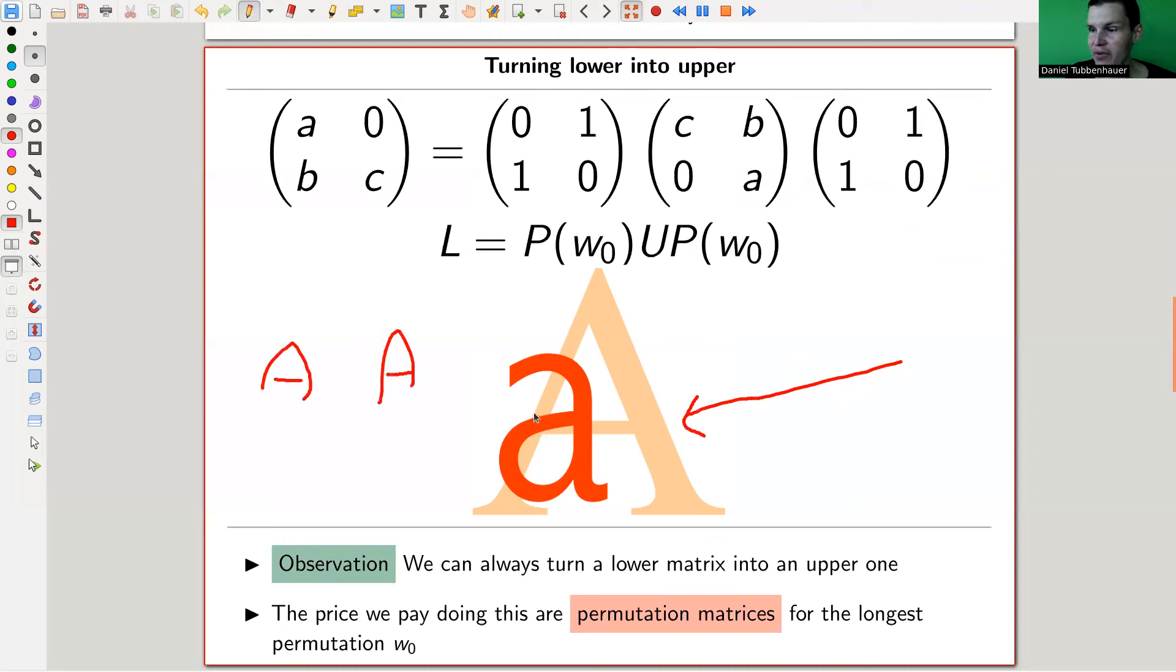So the Bruhat decomposition now says you can actually—I will have a more precise statement on the next slide—you can actually change the lower triangular matrix into an upper triangular matrix if you throw in nice permutations. So this permutation is a little baby calculation. You can change the lower one into an upper one if you throw in permutations. That's the price you pay. So before we had lower and upper, but now we should change lower to upper.